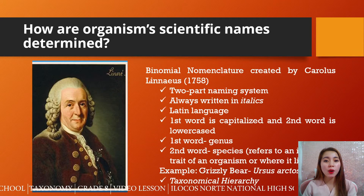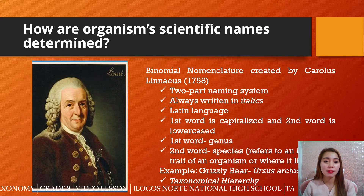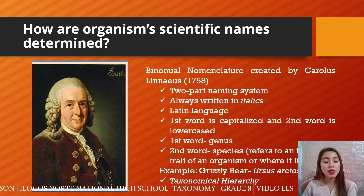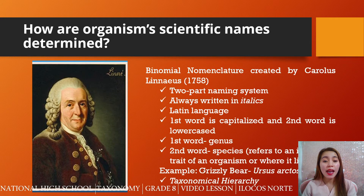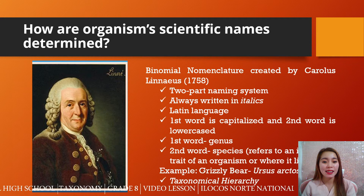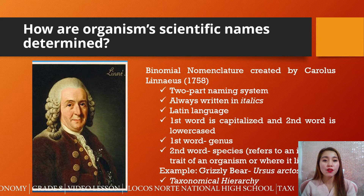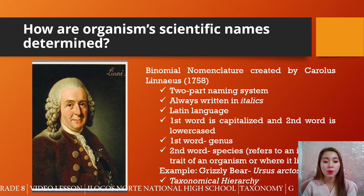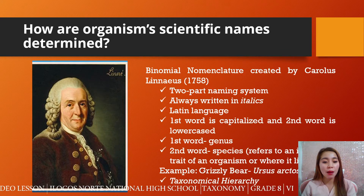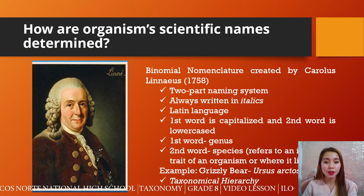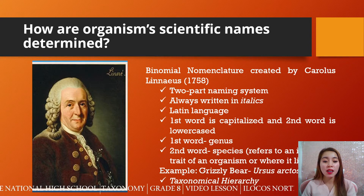So how are organisms' scientific names determined? According to Carolus Linnaeus, he devised the binomial nomenclature system in the year 1758. There are two parts of the naming system. Take note: it is written in italics. The first word is capitalized and the second word is lowercase. The first word tells us the genus and the second word tells us the species. For example, the grizzly bear's scientific name is Ursus arctos. He also developed the taxonomical hierarchy.